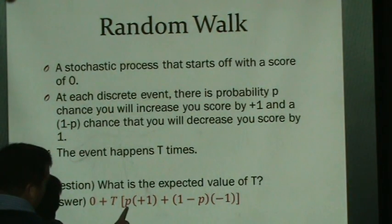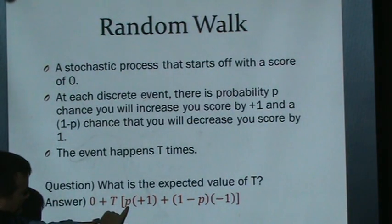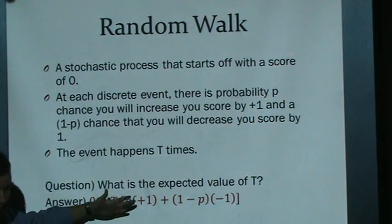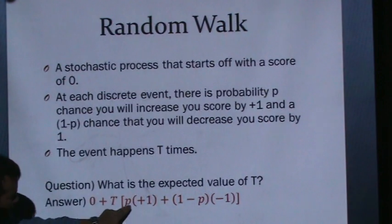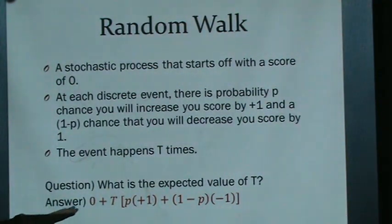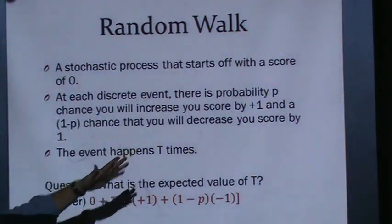For example, if the probability was 50% chance up by one and 50% chance down by one, each event has an expected gain of zero — so you start at zero and expect to end at zero. If there was a 75% chance you'd go up and 25% chance you'd go down, your expected gain per step would be 0.5. So after T steps you'd expect to be at T over 2. If you did this 20 times, you'd expect to be at 10.